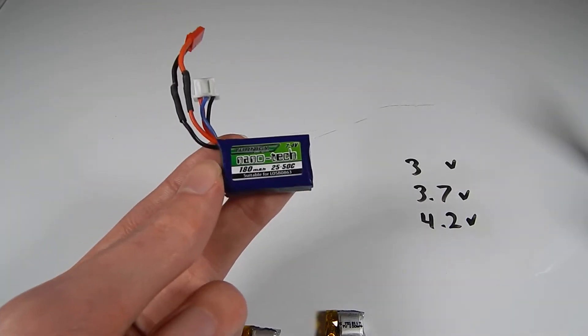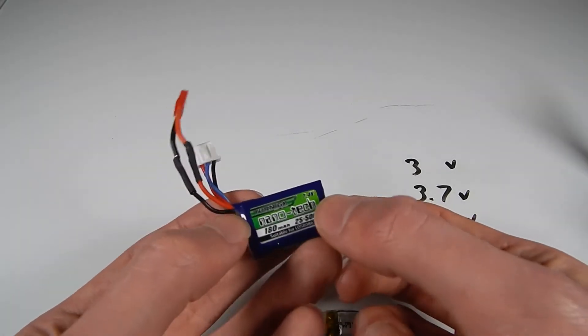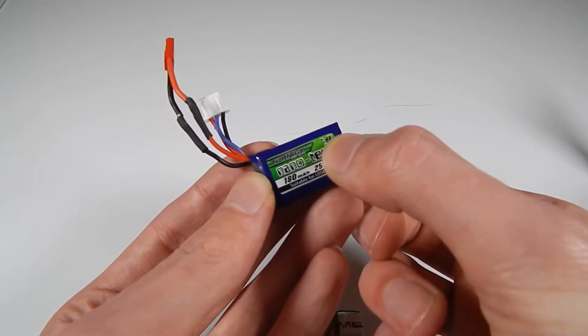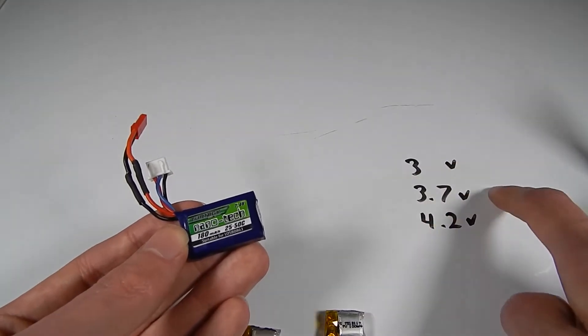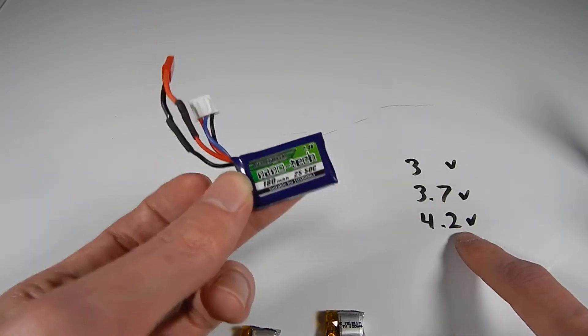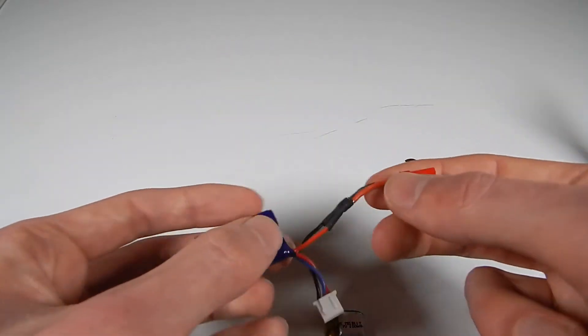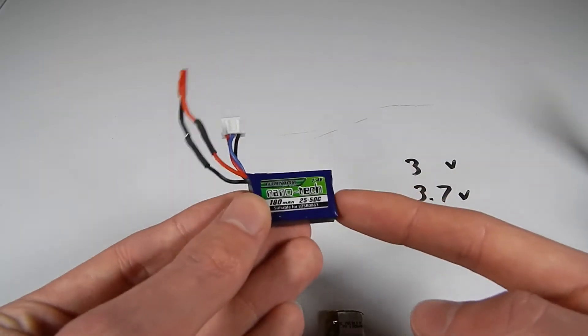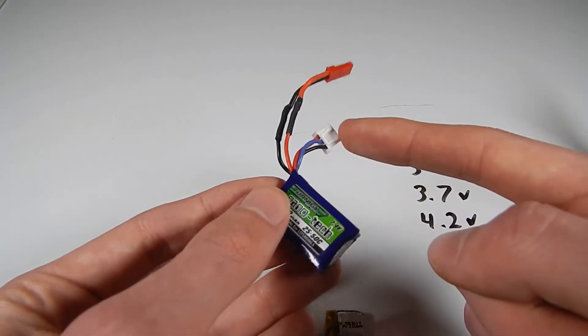This guy here is 2S which means it is a 2 cell LiPo battery. As you can see written on the case there, it is a 7.4 volt battery, basically double the nominal, but that means when it's charged it's actually doubled to 4.2 which means it's 8.4 when fully charged. Although this one is actually dead which is why we're doing some surgery on it. It got discharged below the 3 volt range and there is nothing I can do to bring this back.